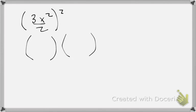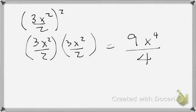On the next one you have parentheses 3x squared divided by 2, everything squared. When you have everything squared, in case you forgot, you have to write 2 parentheses. 3x squared over 2. So my answer is 9x to the 4th over 4.